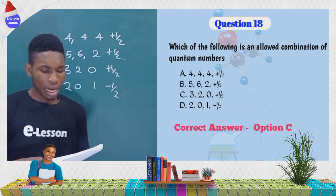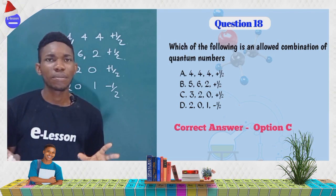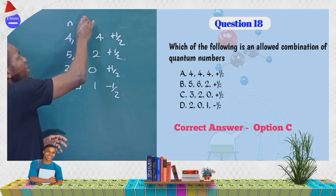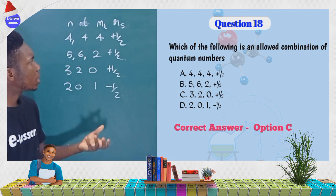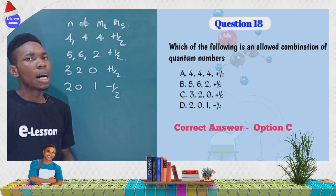Note that the first number is the principal quantum number (n), the second is the azimuthal quantum number (L), the third is the magnetic quantum number (ML), and the fourth is the spin quantum number. The spin quantum number can only take two values: +½ and −½. So far, everything here is correct in terms of spin.